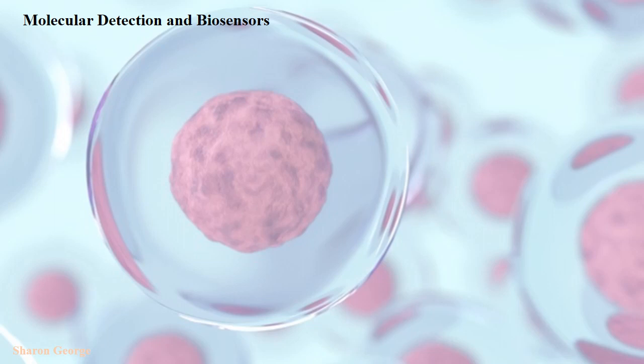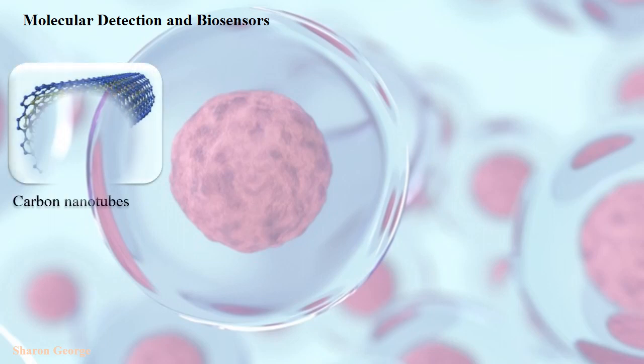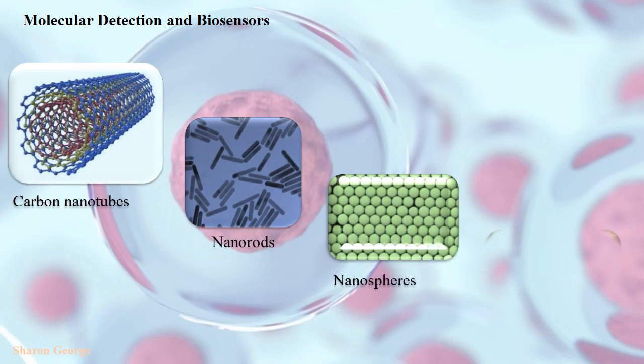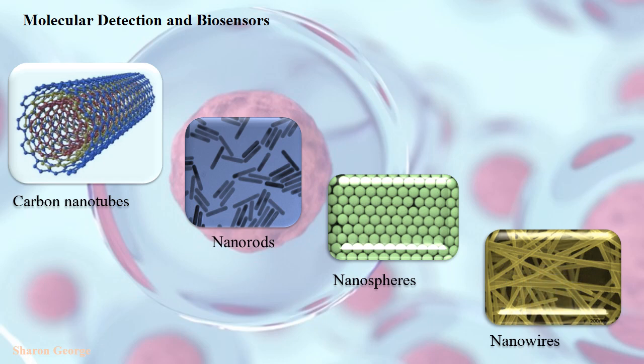Next is molecular detection and biosensors. The self-renewal pathway of stem cells and their differentiation potential is very useful to identify and study such molecules and their functions. Nanoparticles in the form of carbon nanotubes, nanorods, nanospheres, and nanowires can serve as novel tools for molecular detection in stem cell research. There are many reports available showing that these kinds of nanoparticles can be used to detect stem cells.